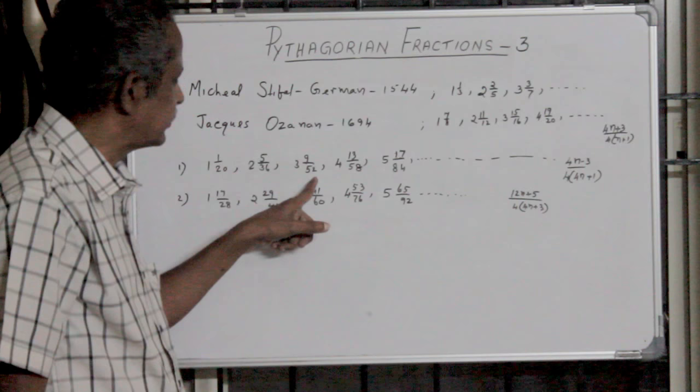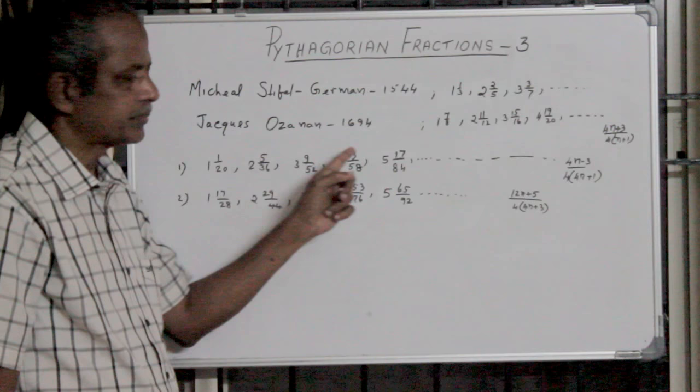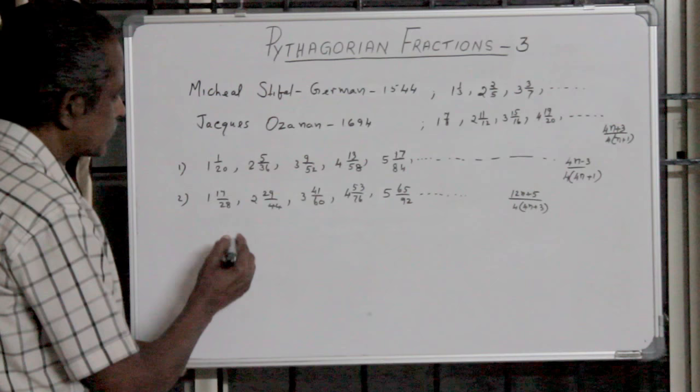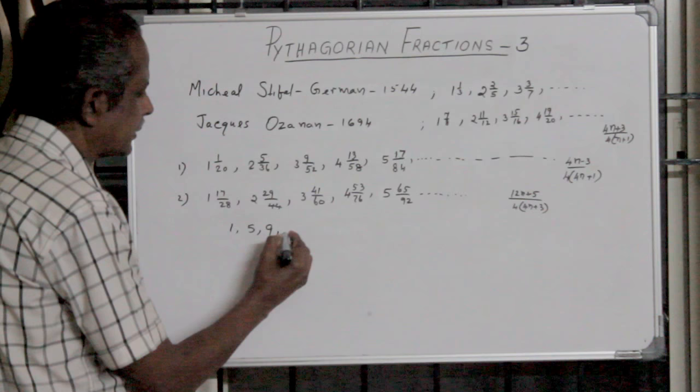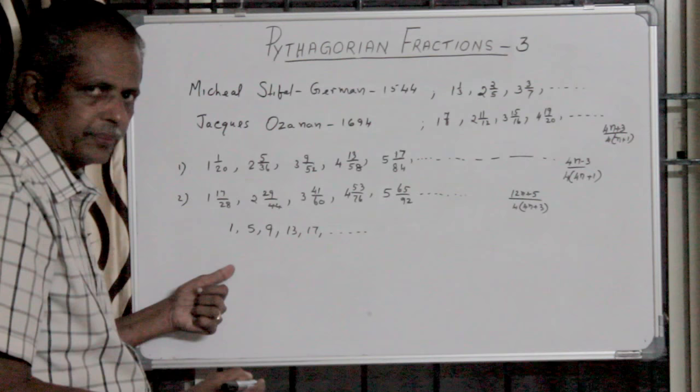Moreover, take the numerators only: they are 1, then the next term is 5, the next term is 9, the next is 13, the next is 17, etc. This is an AP starting from 1 and the common difference is 4.